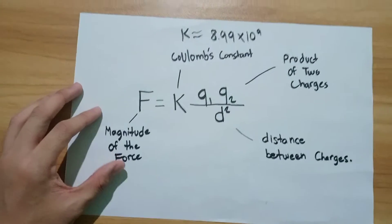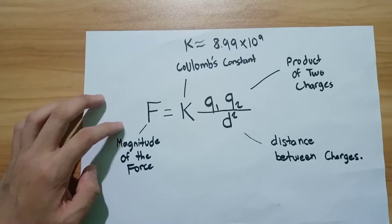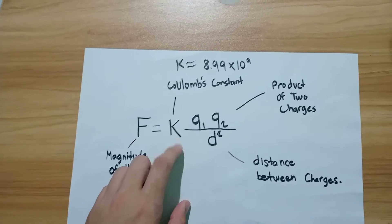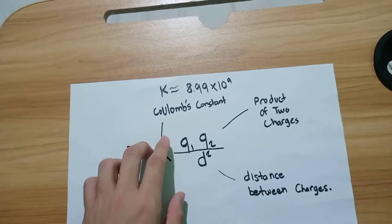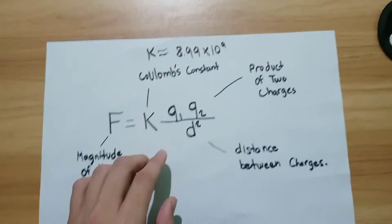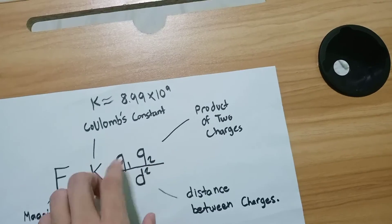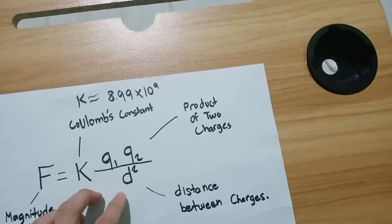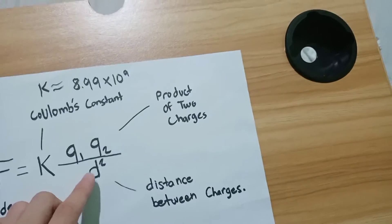Now this is the Coulomb's law formula. This letter F here is the magnitude of the force and this K is Coulomb's constant which is 8.99 times 10 to the power of 9. These two are the product of two charges while this d at the bottom is the distance between charges which is squared.